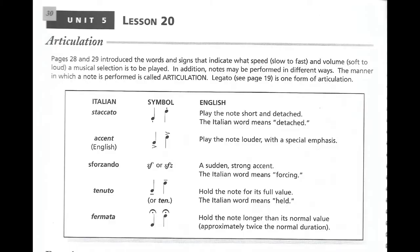Articulation. In the last two weeks, we learned about the words and signs that indicate what speed — slow or fast — and volume — soft to loud — a musical selection is to be played. In addition to those, notes may be performed in different ways. The manner in which a note is performed is called articulation. Legato is one form of articulation — that was when we blurred the notes together, we slurred them.